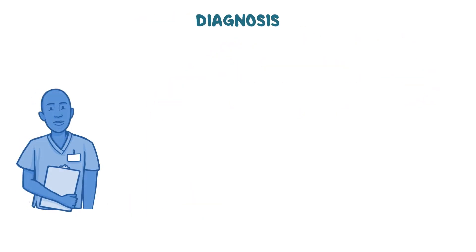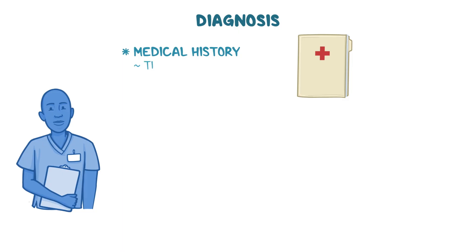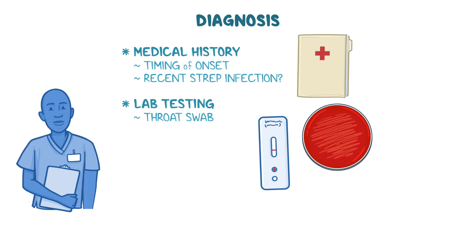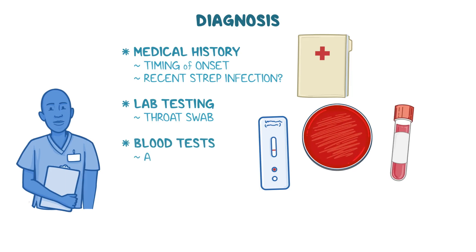Diagnosis of PANDAS starts with a detailed medical history, looking closely at the timing of symptom onset and whether there's been a recent strep infection. Lab testing focuses on evidence of strep exposure. A throat swab for rapid antigen detection or culture can pick up an active infection. If that's negative, blood tests such as antistreptolysin O can suggest an infection within the last few weeks.